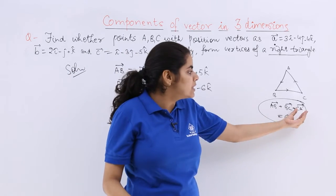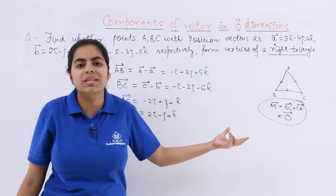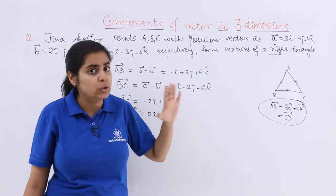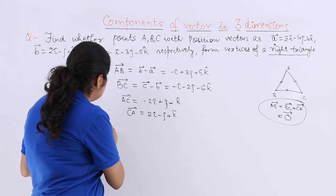So if AB plus BC plus CA is equal to 0 vector, I have these points as the vertices of a triangle, not right triangle till now. So let's check what is AB plus BC plus CA.